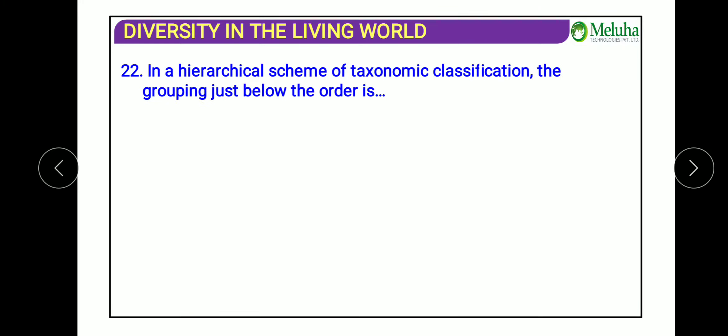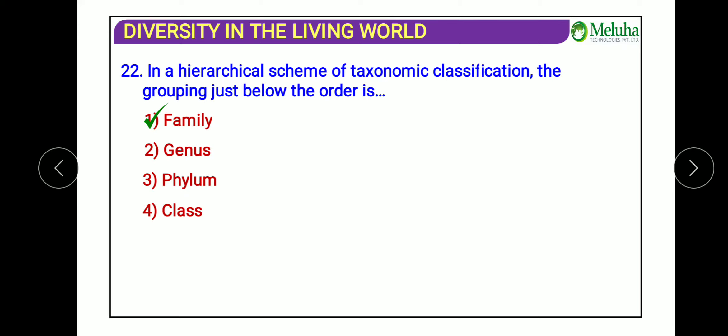The next question: in a hierarchical taxonomic classification, the grouping just below the order is which rank? The answer is family. The hierarchy goes: kingdom, phylum, class, order, family, genus, species. So just below the order, we have family.